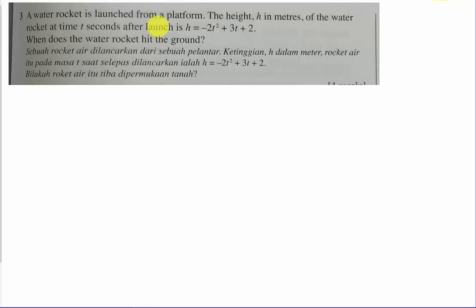A water rocket is launched from a platform, and then the height in meters of the water rocket at time t seconds after launch. So you have the equation. Over here you have some information. H represents the height in meters and t represents the time in seconds. Alright, then the question asks when does the water rocket hit the ground?